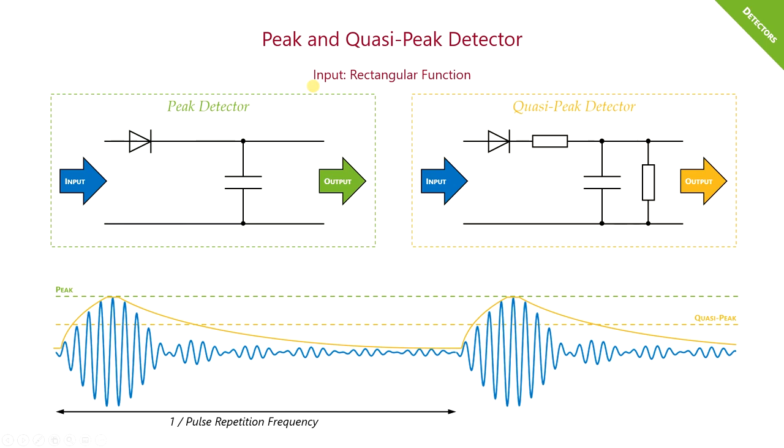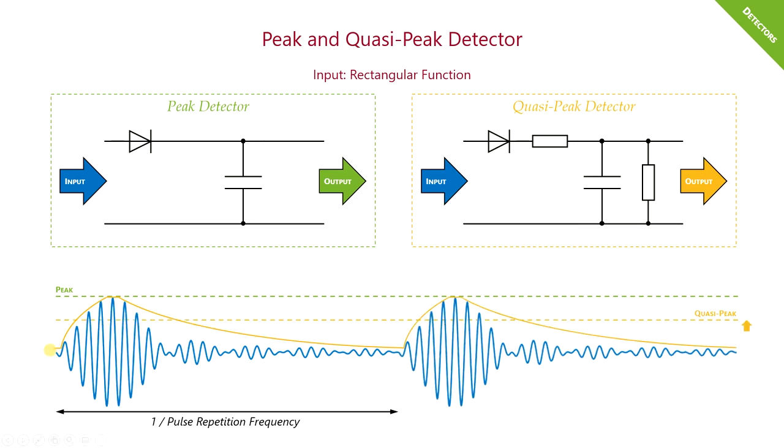However, this is not the case anymore when applying other than pure sinusoidal input signals, as for example rectangular pulses. Whereas the capacitor in the peak detector will not discharge itself, the capacitor in the quasi-peak detector will discharge via the discharge resistor that is parallel to it. Now, you might see, if the pulse arrives rarely in the input of the EMI receiver, the capacitor has time to discharge. The more often this pulse occurs, the less time the capacitor will have to discharge, and the higher will be the output value.